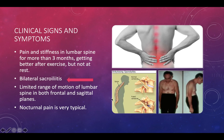The clinical signs and symptoms: patients usually complain of pain and stiffness in the lumbar spinal region for more than three months continuously. It gets better after exercise but worsens during rest. There is bilateral sacroiliitis — inflammation of both sacroiliac joints — which leads to limited range of motion in the lumbar spine in both frontal and sagittal planes.